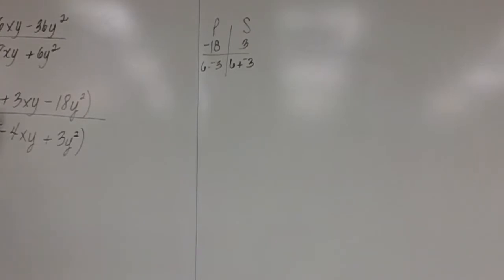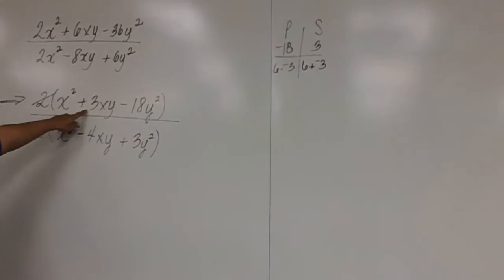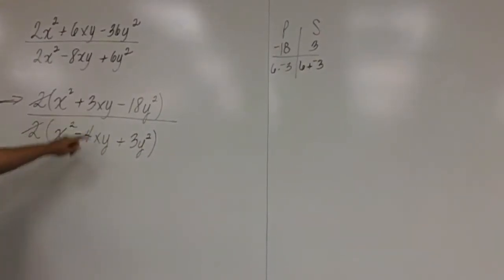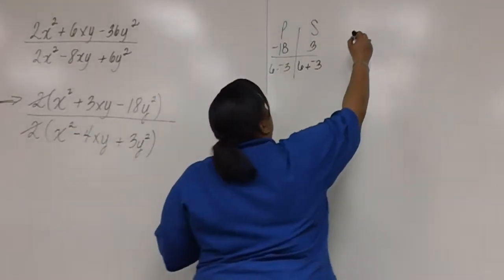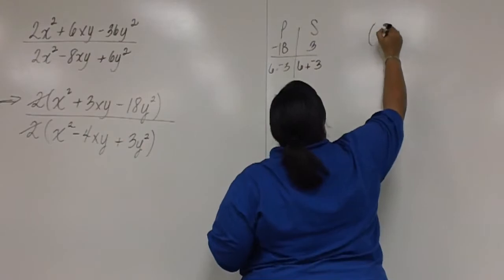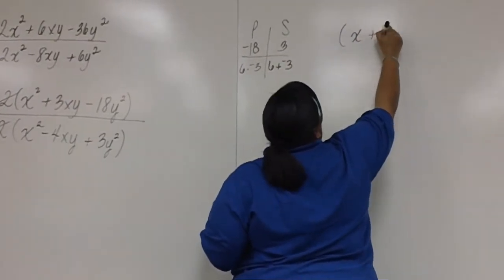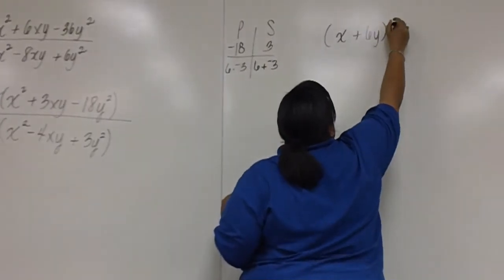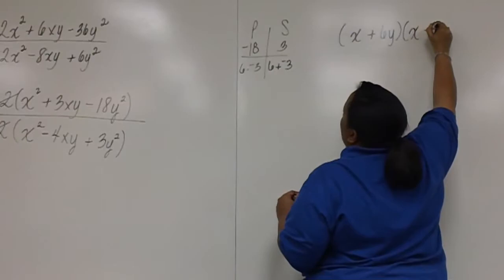So when you factor this trinomial, you'll fill in the middle with a positive 6xy and a negative 3xy. So that when you finish factoring, you'll have x plus 6y and x minus 3y.